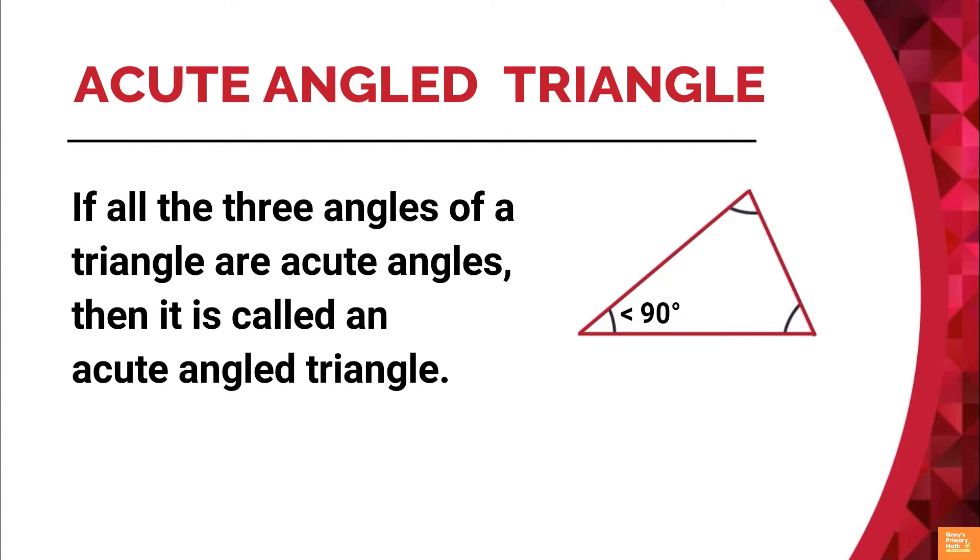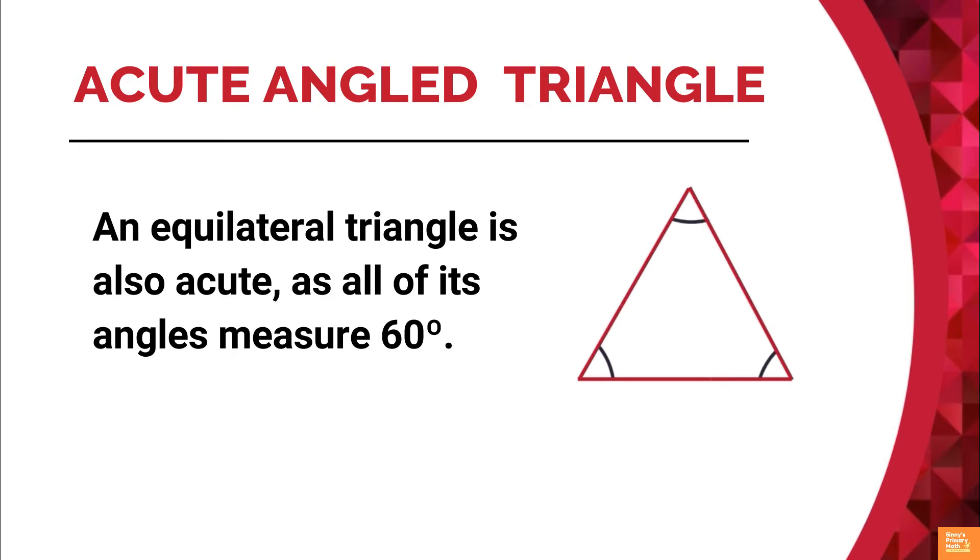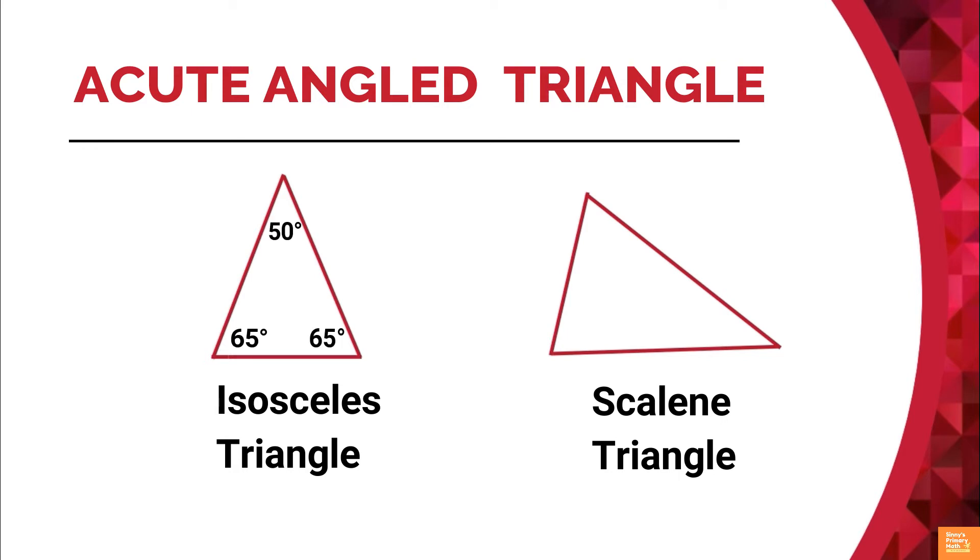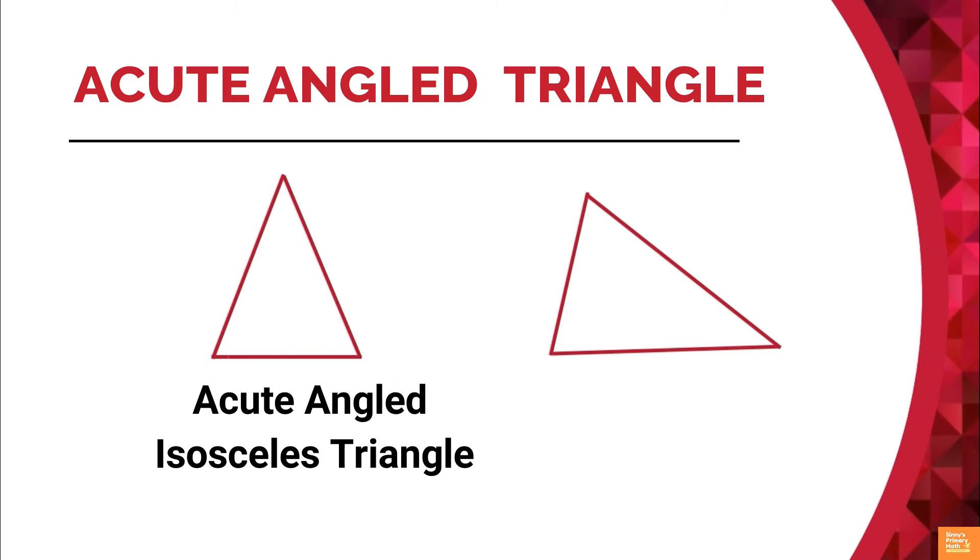An acute triangle has all of its angles less than 90 degrees. An equilateral triangle is also acute as all of its angles measure 60 degrees. Isosceles and scalene triangles can also become acute if all of their angles are acute. In such special cases, we can say acute angle isosceles triangle and acute angle scalene triangle.